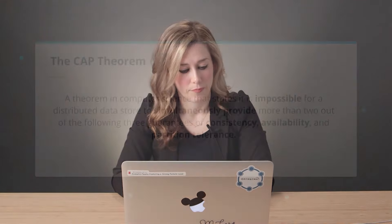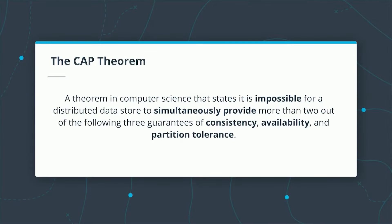The CAP theorem is a theorem in computer science that states it is impossible for a distributed data store to simultaneously provide more than two out of the three following guarantees.